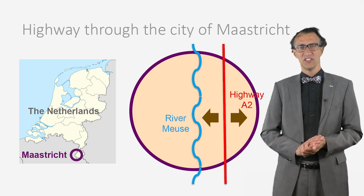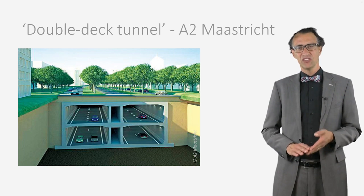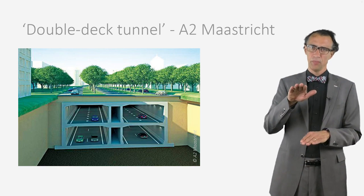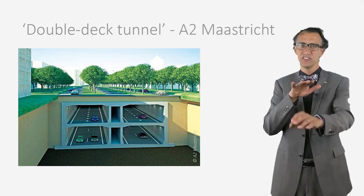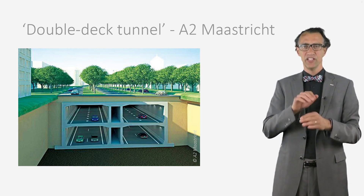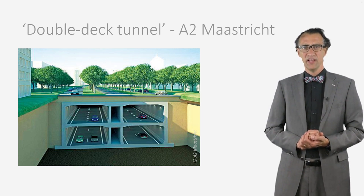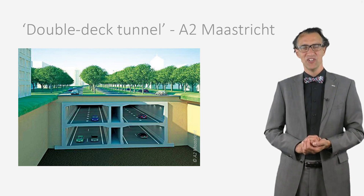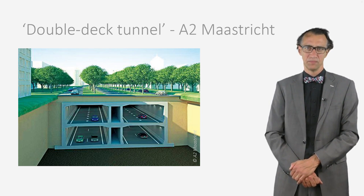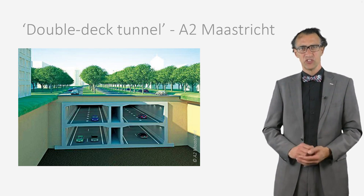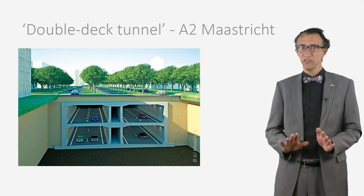For those who are interested, some technical details about the final solution. It was decided to create a double-deck tunnel. The upper part is for local traffic in the city and the lower part is for traffic that doesn't have the destination Maastricht. This double-deck tunnel has sufficient capacity for the cars and lorries. Specifically for the civil engineers among you, interesting is that this is the first double-deck tunnel in the Netherlands.